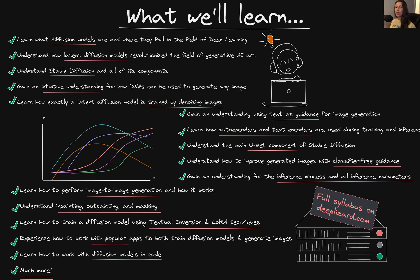Now we'll go through some of the many topics that will be discussed during this course — be sure to check out the course page for the full syllabus. We'll first be learning about what diffusion models are and where they fall in the general field of deep learning. Then we'll understand how latent diffusion models have revolutionized generative AI art, and move on to understanding Stable Diffusion and all of its various components, as well as gaining an intuitive understanding for how deep neural networks can generate any image we'd like.